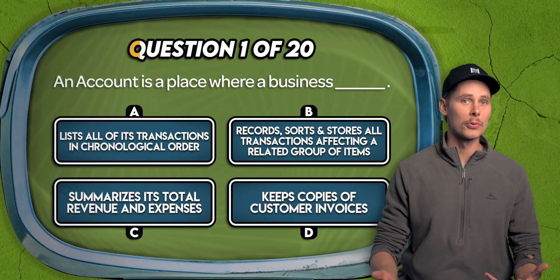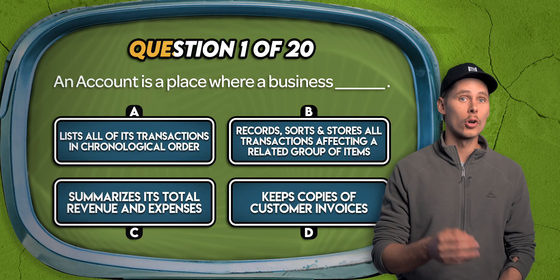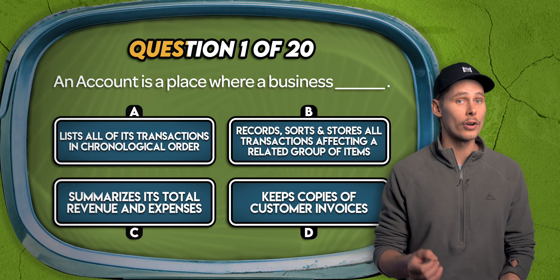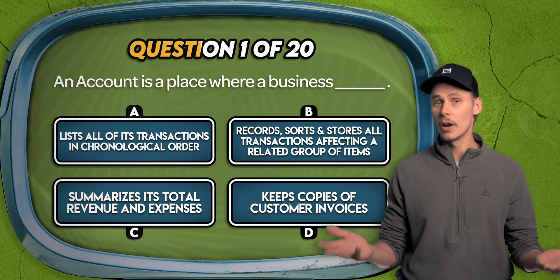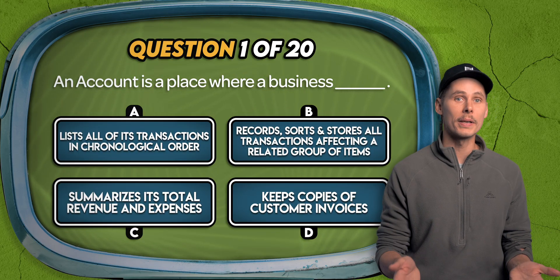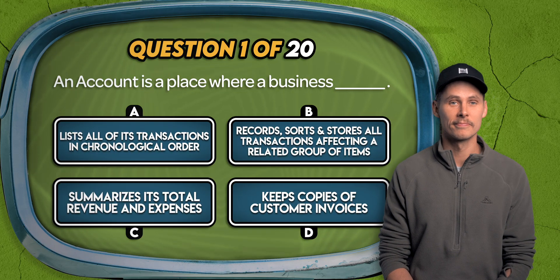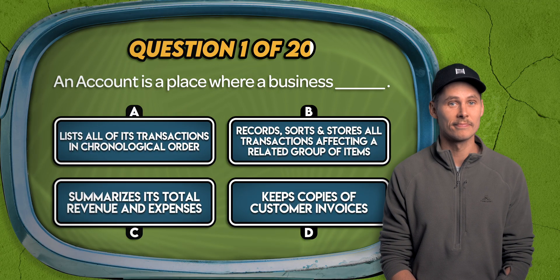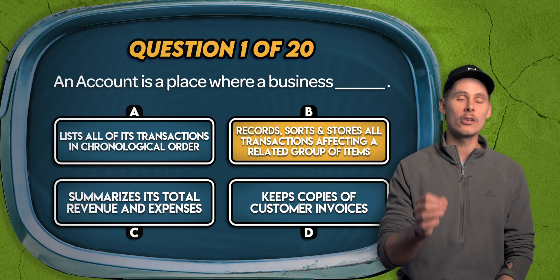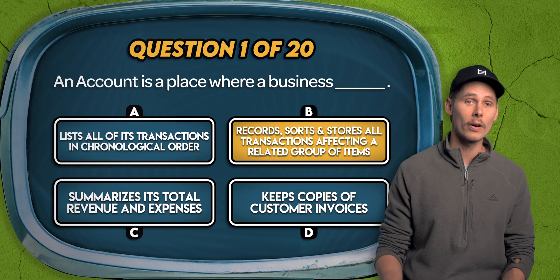Question 1. An account is a place where a business: lists all of its transactions in chronological order; records, sorts and stores all transactions affecting a related group of items; summarizes its total revenue and expenses; or keeps copies of customer invoices. It's B. An account tracks increases and decreases for a specific category like cash or accounts payable.